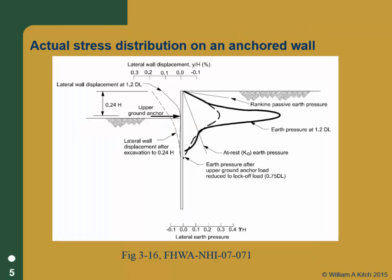To complicate things further, let's talk about an anchored wall — a cut wall where you excavate down to some level and then install your anchor, which goes back behind the wall and is anchored. You're going to put two loads on it. First, you load the anchor to P equals 120% of the design load to make sure it can hold the design load. After testing and ensuring it's okay, you back that off to 75% of the design load. We'll talk more about this when we get to anchors.